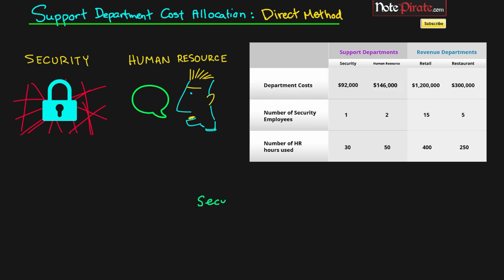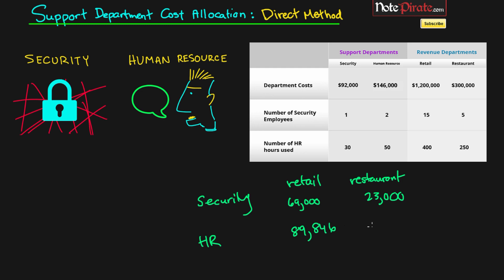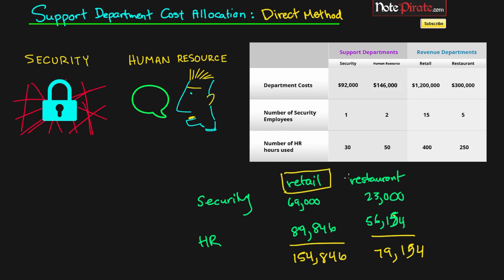To summarize, I'll draw a table shown in each video. From Security to Retail: $69,000. Security to Restaurant: $23,000. HR to Retail: $89,846. HR to Restaurant: $56,154. That gives us a final total for Retail of $156,154 — correction from an earlier figure — and for Restaurant of $79,154. That is the total amount allocated to the Retail and Restaurant departments.